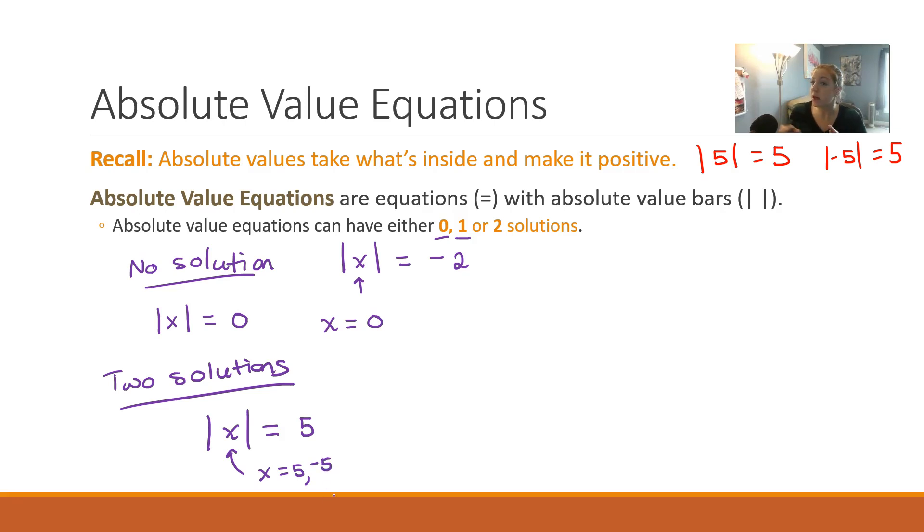Or, I could plug in the negative value. Because when I plug in the negative value into the absolute value, it takes it and turns it positive. So basically, what's inside that absolute value could be positive or negative of whatever's outside. So take what's inside the absolute value and set it equal to the positive value outside and the negative value outside.